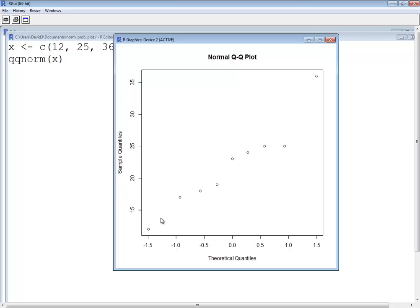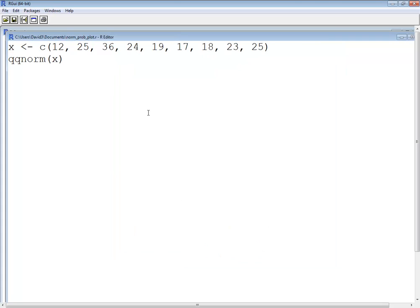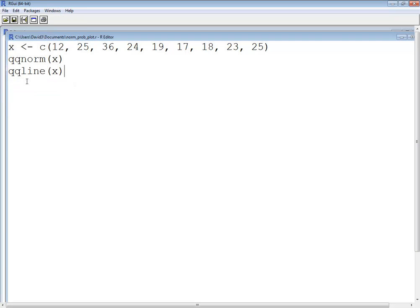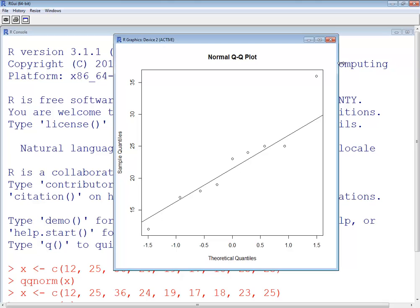Now if you're wanting to see an imposed line on here, so you can see how close it follows, then after the qqnorm you can do qqline X. And that does it based upon this data set. So now if I do a file save and choose edit, run all. My window didn't pop up automatically there. So I'm going to minimize that and here it is.